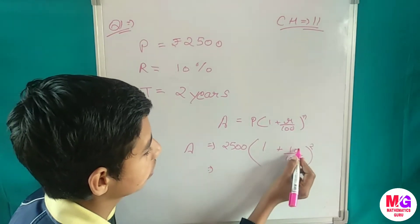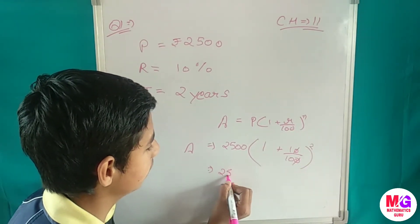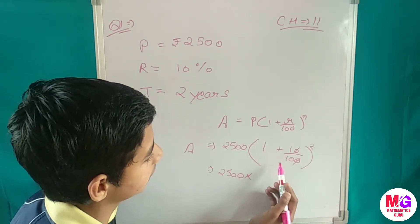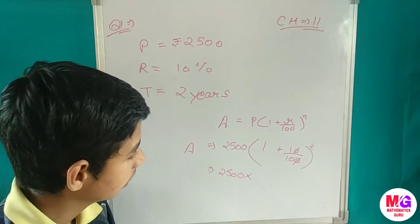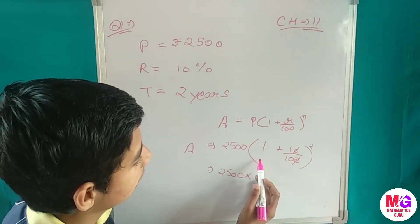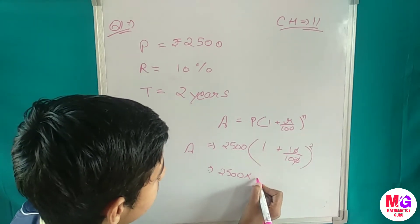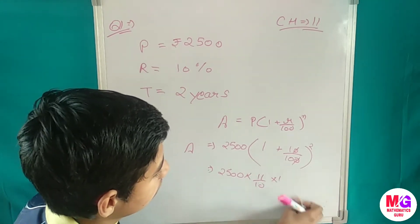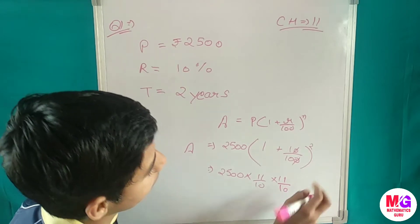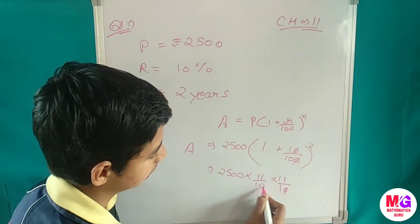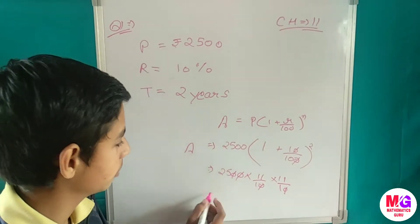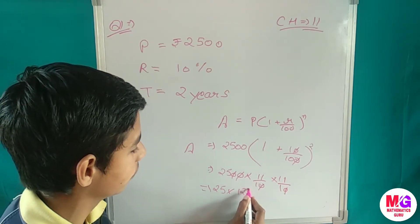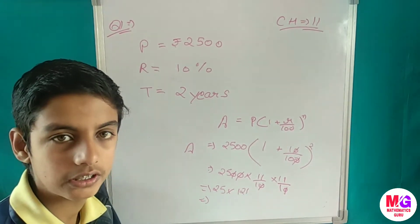Substituting into the formula: A equals 2500 times (1 plus 10 upon 100) squared. Taking the LCM, we get 11 upon 10. Since the power is 2, we multiply 11 upon 10 into 11 upon 10. So we get 2500 multiplied by 11/10 multiplied by 11/10. After the 10s cancel, we multiply 25 by 11 and 11, which equals 25 times 121.